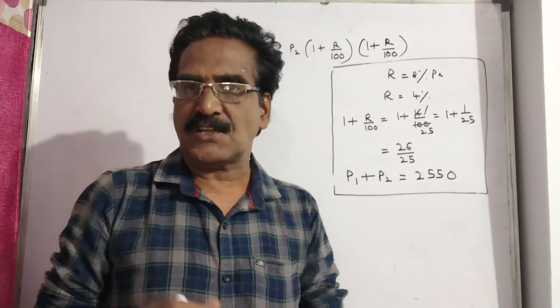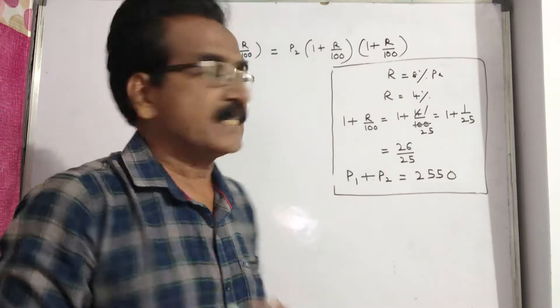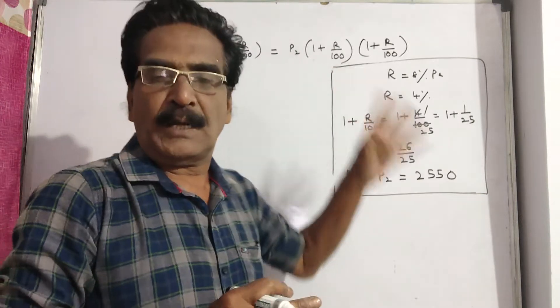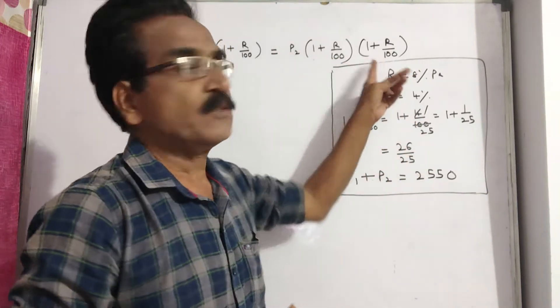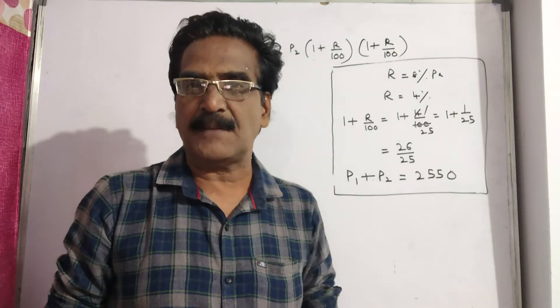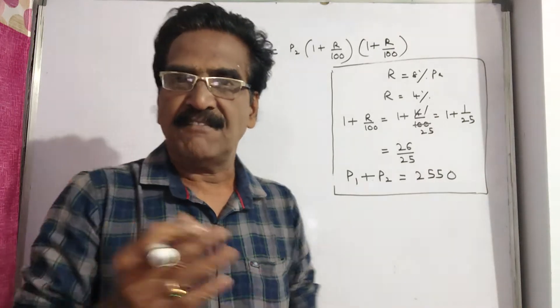This is the first installment that is paid after 6 months. P2 into 1 plus R by 100 whole square. This is the second installment that is paid after 1 year.